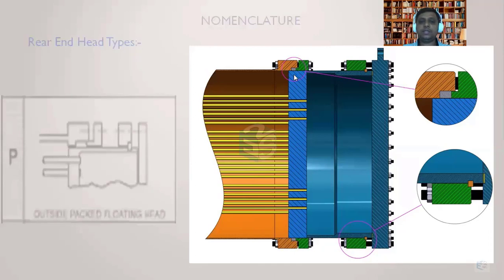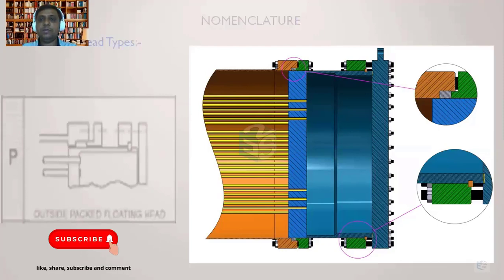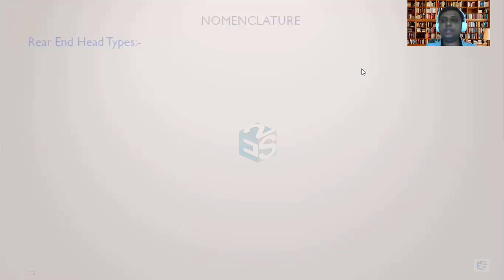The tube side leakage is restricted at one point and shell side leakage is restricted at another. Since the packing is from the outside, this construction is called the outside packed floating head. We have explained the overall construction in 2D; now we will better understand it through a 3D view of how the assemblies fit together.